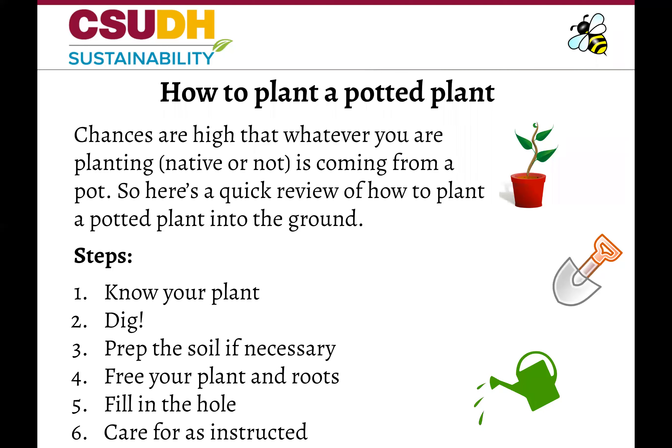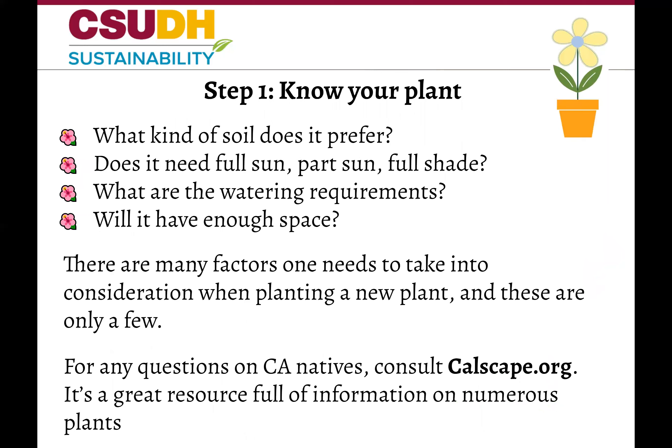Have you ever planted a plant from a pot before? Typically seeds are germinated in specialized pots and then moved to other pots prior to being sold. So chances are high that whatever you are planting, whether it's native or not, will be coming from a pot. The first step is to know your plant: what kind of soil does it prefer, what are the sun and watering requirements, and how large will it get? There are many more factors to consider, and a good guide to use is calscape.org — it is full of information on just about every California native.